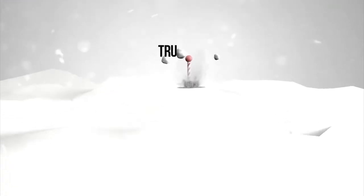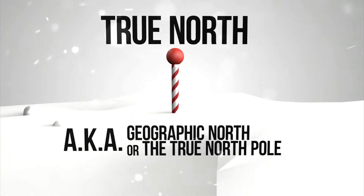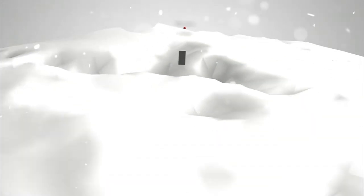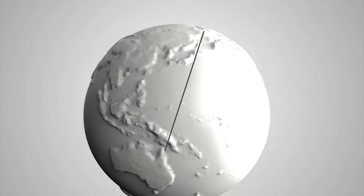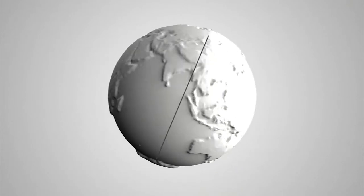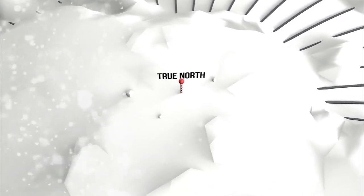True north, also known as geographic north or the true north pole, is the location in which the Earth's invisible spin axis exits the Earth. You can also think of it as the point where all longitudinal lines converge in the northern hemisphere. This is true north.